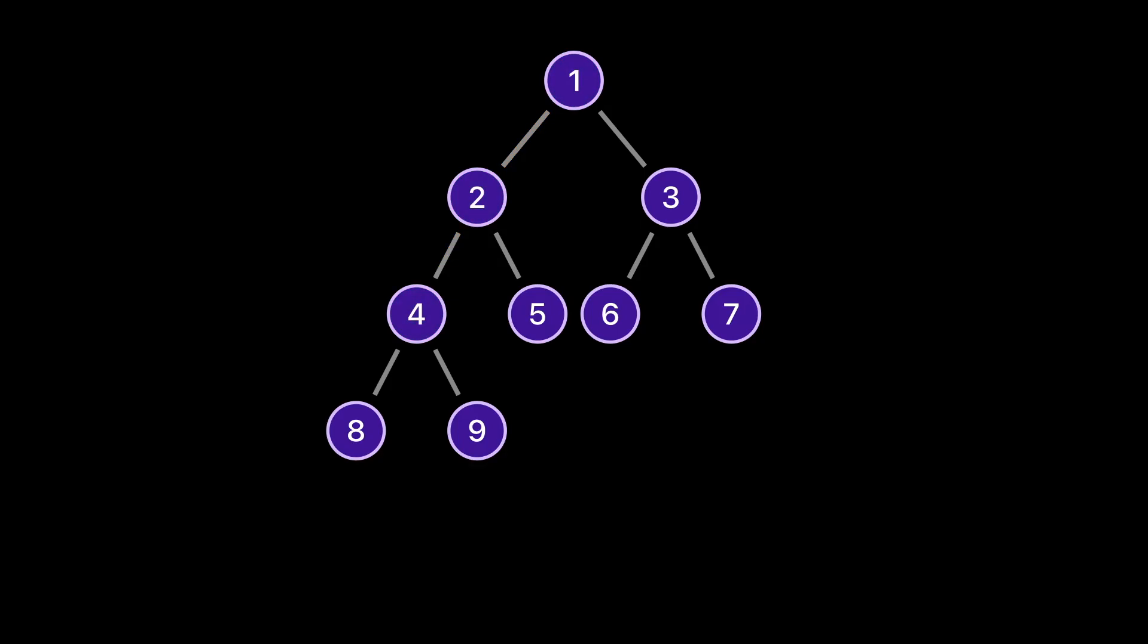The height of a binary tree is the length of the longest path from the root node to any leaf node in the tree. The height of this binary tree is 3 because the longest path from the root node to a leaf node equals 3.